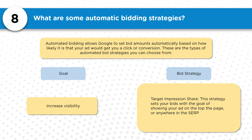If your goal is to increase visibility, you'd use target impression share. This bidding strategy shows your ad at the top of the page. For example, you can tell Google you want to be shown at least 50% of the time when somebody searches a keyword you're bidding on, and Google will automatically set your bids to make sure your ad appears at the top of the page at least 50% of the time.